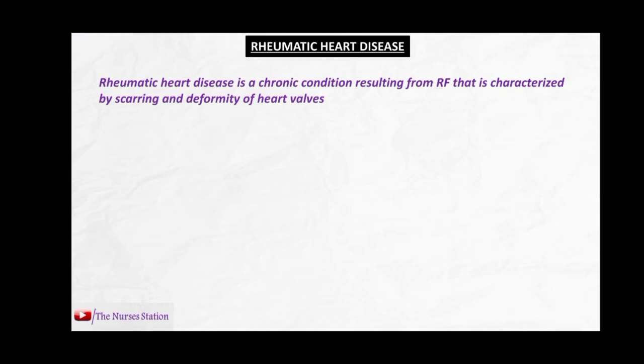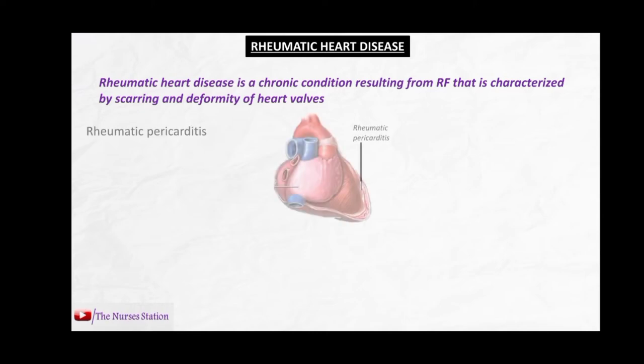If rheumatic fever attacks the pericardium, it is termed rheumatic pericarditis. In rheumatic pericarditis, the inflamed capillaries become more permeable and large molecules like fibrinogen leak out. In the pericardium, fibrinogen polymerizes and is converted into fibrin strands — this is termed fibrinous pericarditis. The signs and symptoms include chest pain that is localized, sharp, and relieves on leaning forward.